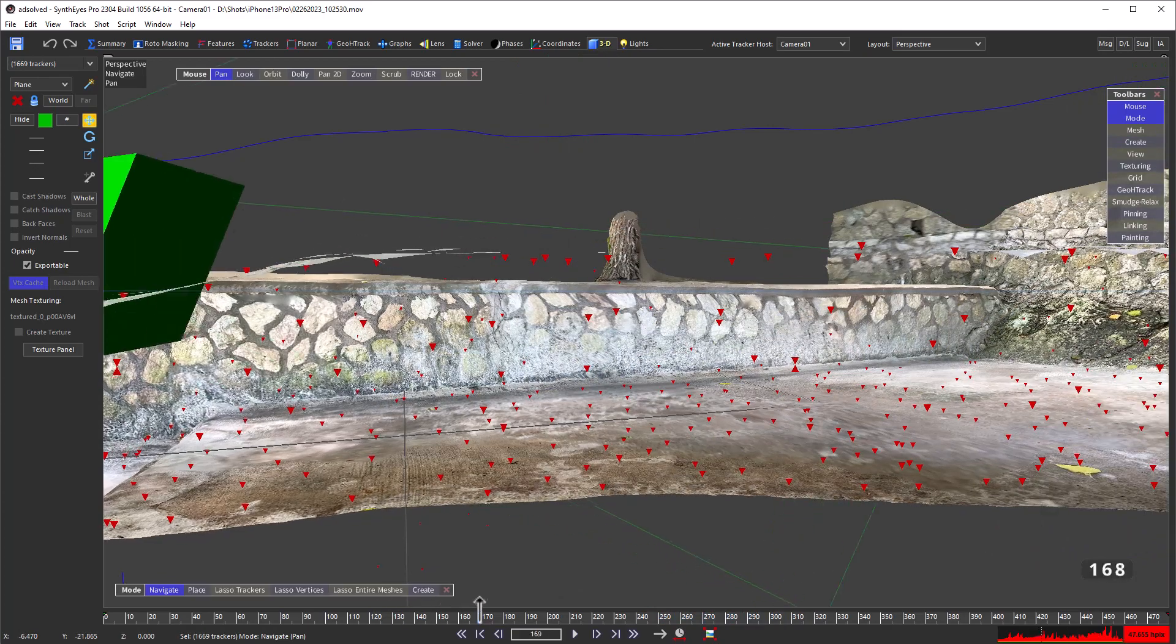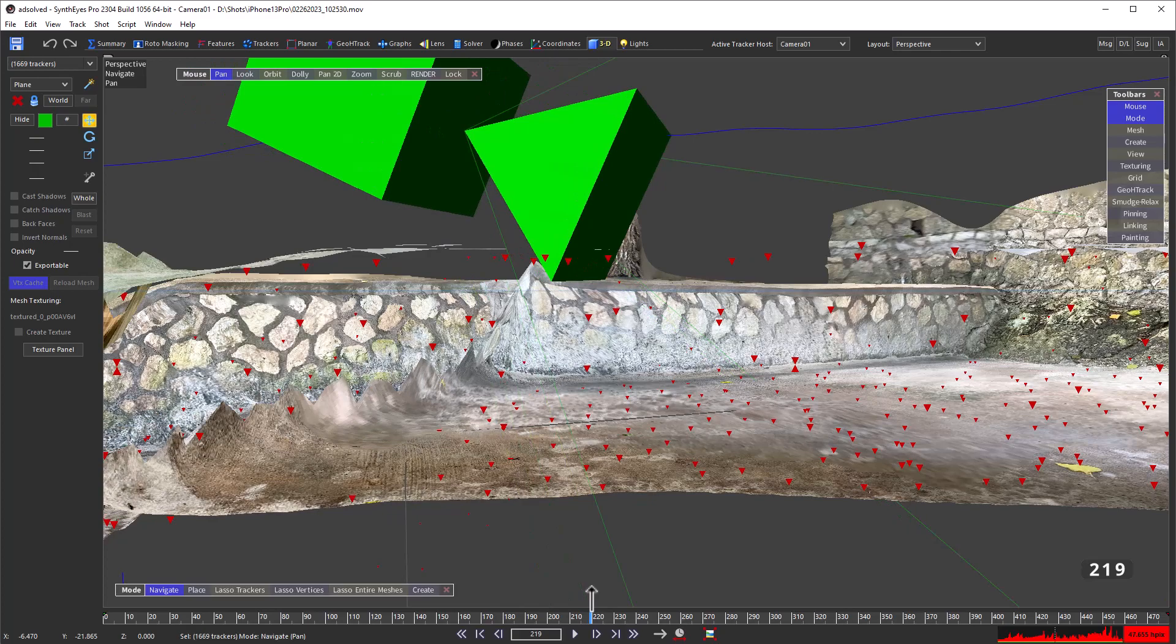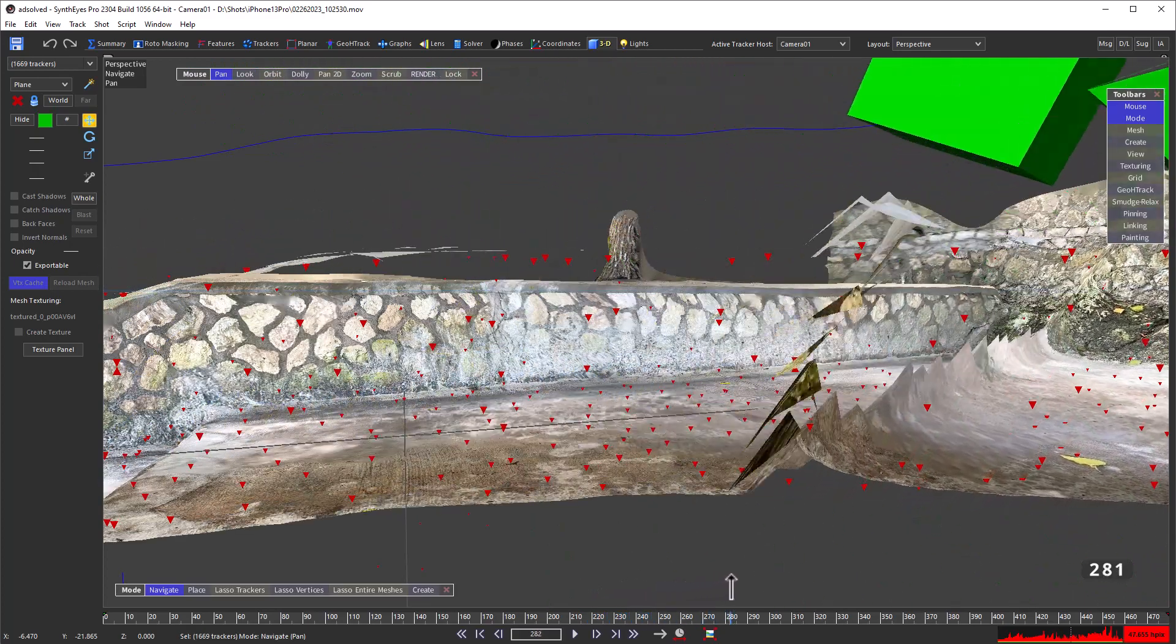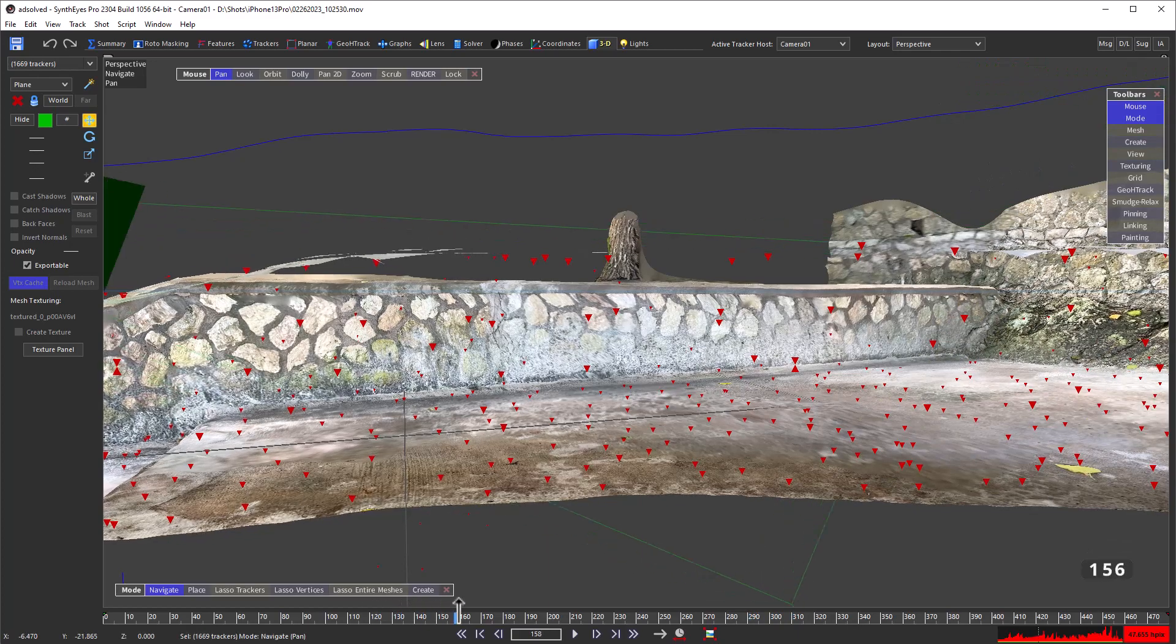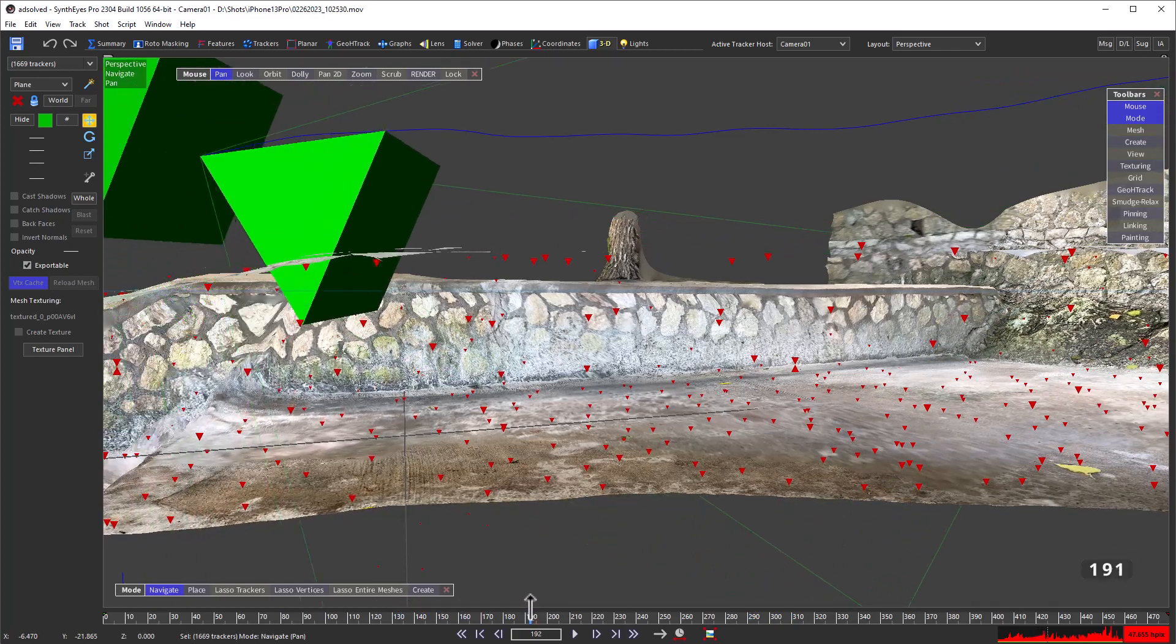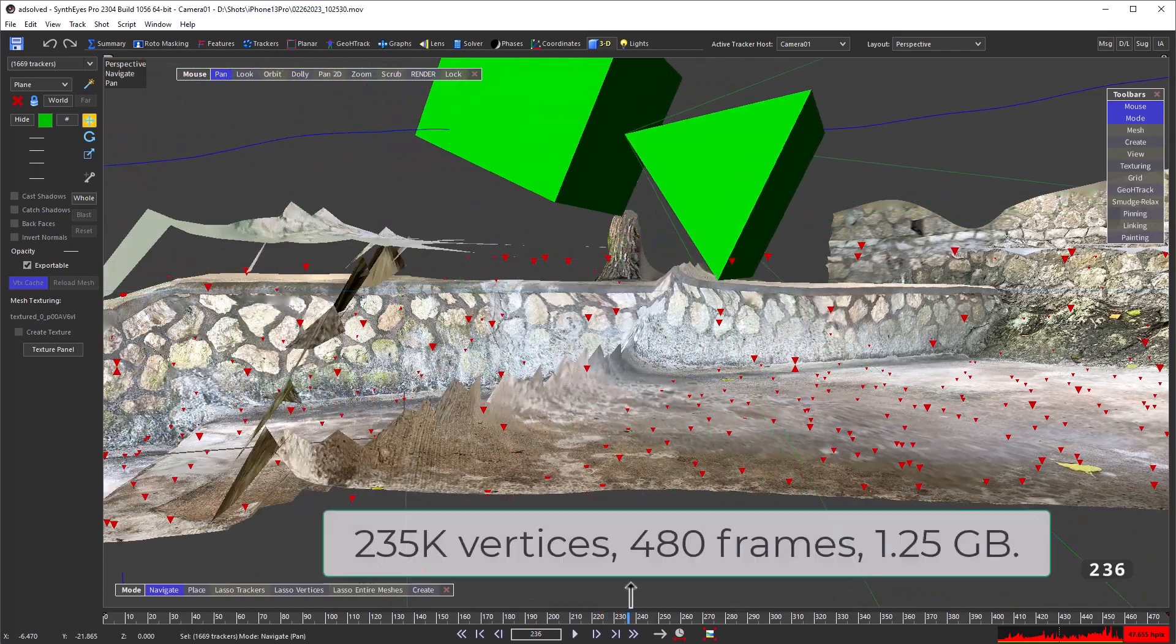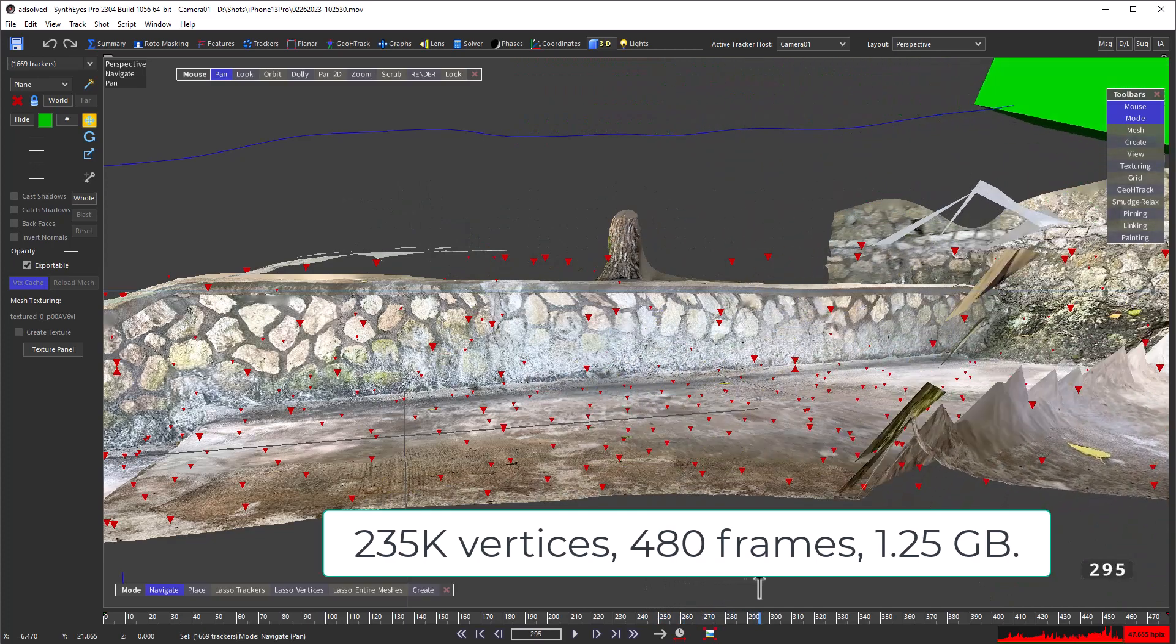If you want to add meshes to the scene, you need to add them first in SynthEyes, then export them so that you have the compensating vertex cache required to make them line up right. You might need to parent 2D graphics to specific vertices on the mesh.